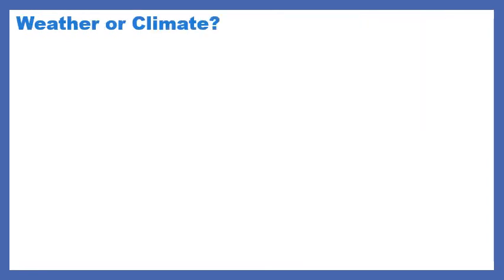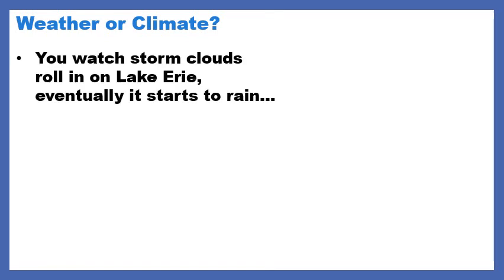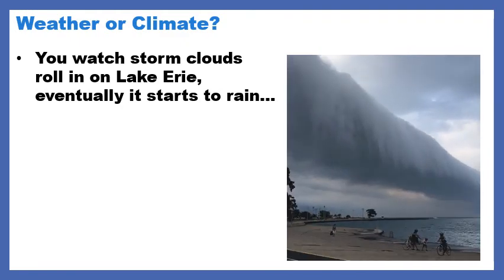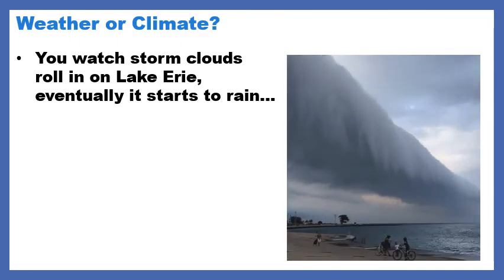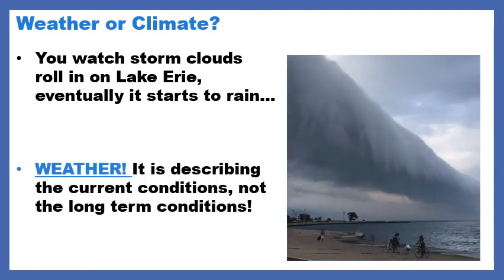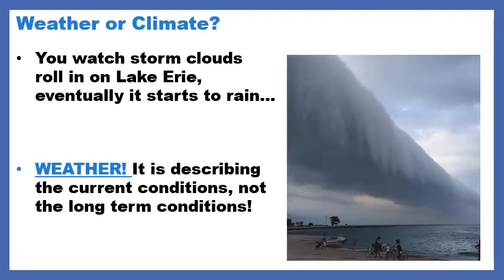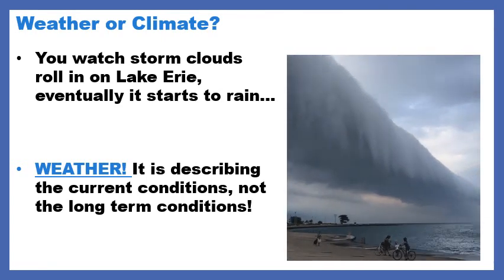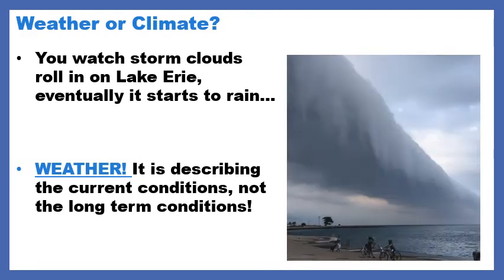We're going to talk more about climate tomorrow, but for now I want to make sure you can tell the difference between weather and climate. Here's your first example: you watch storm clouds roll in on Lake Erie and eventually it starts to rain — is this weather or climate? Remember, weather is short-term conditions and climate is the pattern of long-term conditions. Hopefully you said weather, because it's describing the current conditions. Whether it's the next five minutes or the next five hours, it's not the long-term condition. That storm cloud rolling in is not going to permanently stay there.